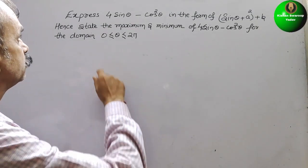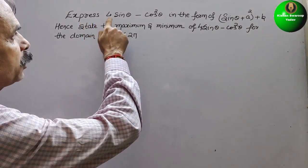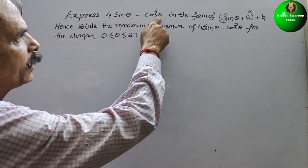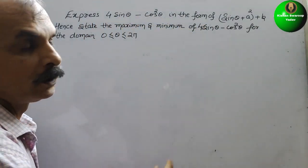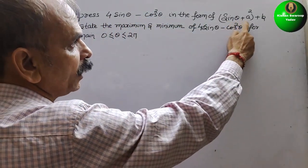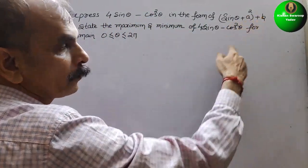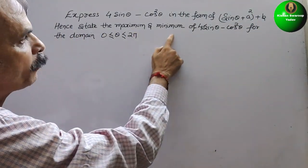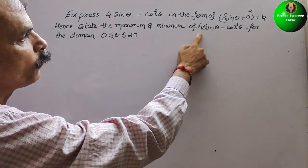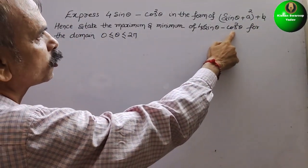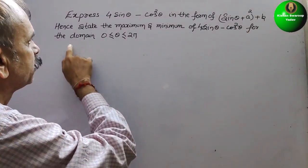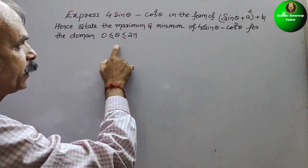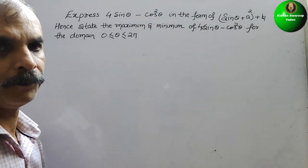Your question is: express 4 sin theta minus cos square theta in the form of (sin theta plus a) whole square plus b. Hence state the maximum and minimum of 4 sin theta minus cos square theta for the domain 0 less than or equal to theta less than or equal to 2 pi.